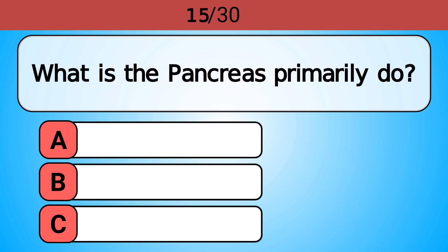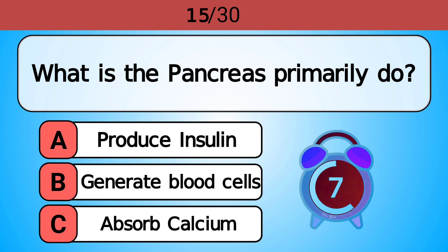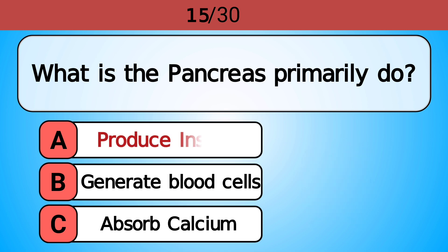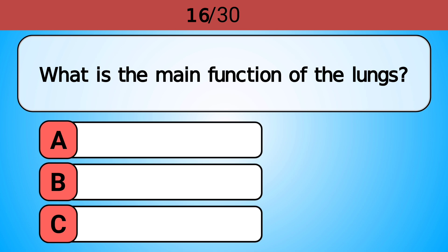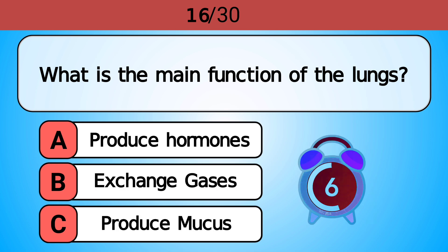What does the pancreas primarily do? Answer A, produce insulin. What is the main function of the lungs? Answer B, exchange gases.